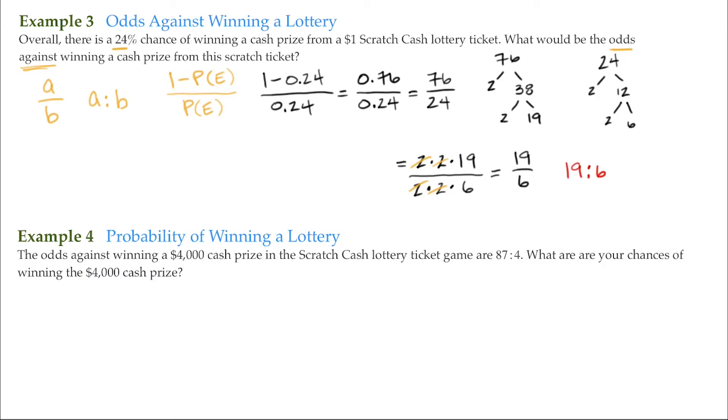Now the next example: the odds against winning a $4,000 cash prize in the scratch lottery ticket game are 87 to 4. What are your chances of winning the $4,000 cash prize?